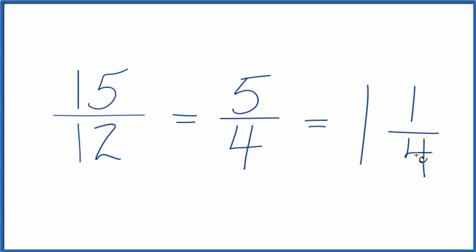You can check that 1 times 4 is 4 plus 1 is 5. So we have our 5. Keep the denominator the same.